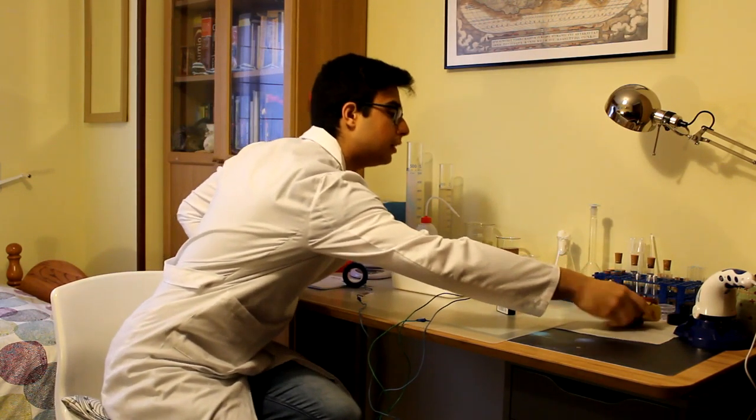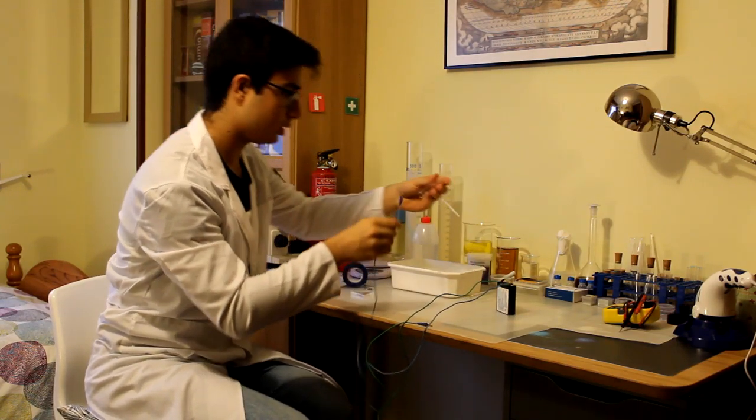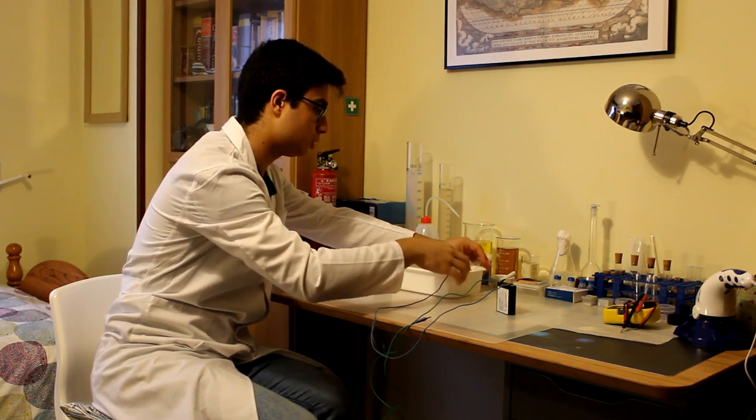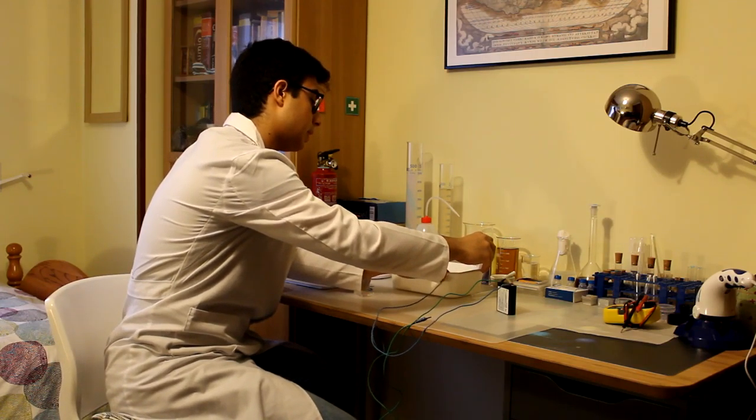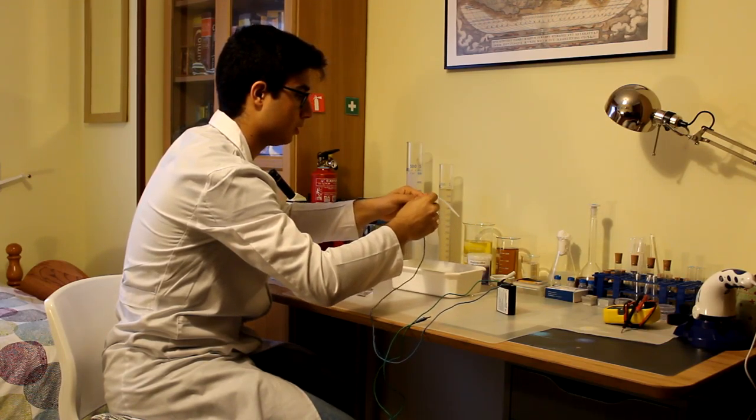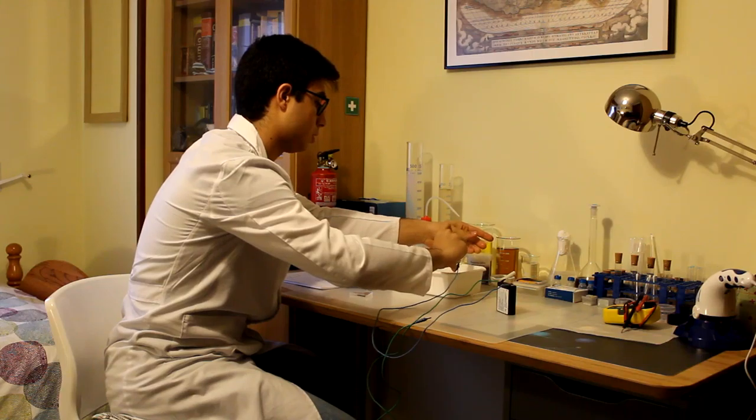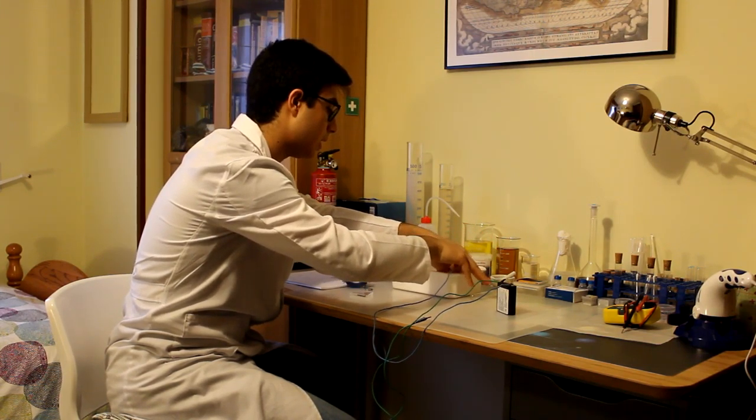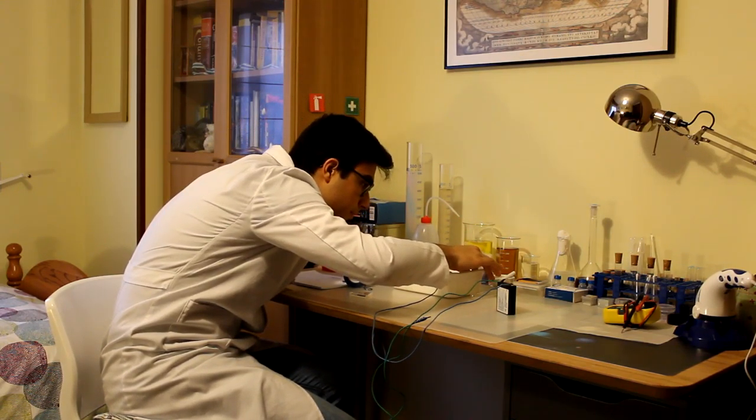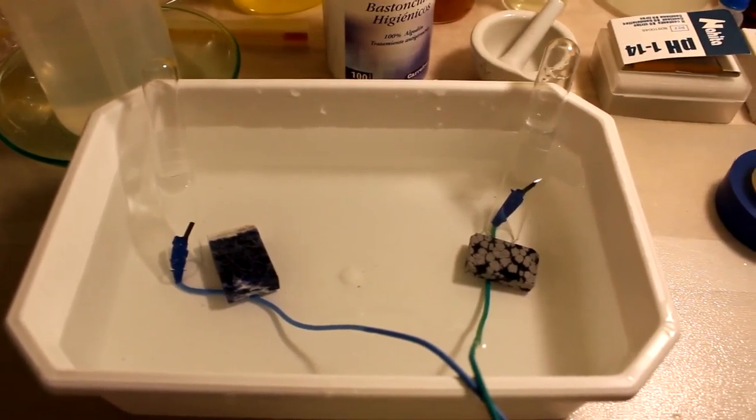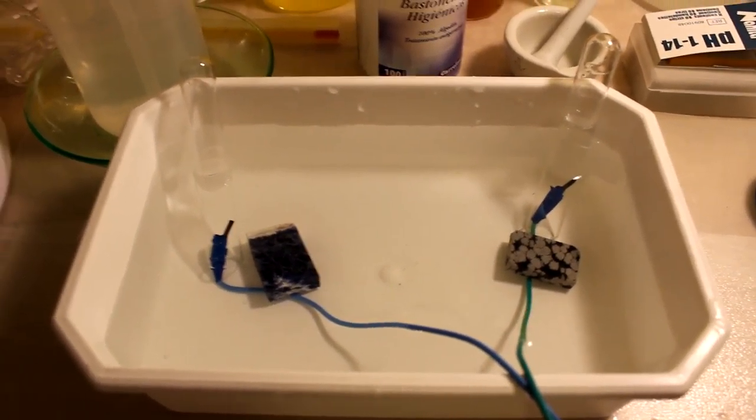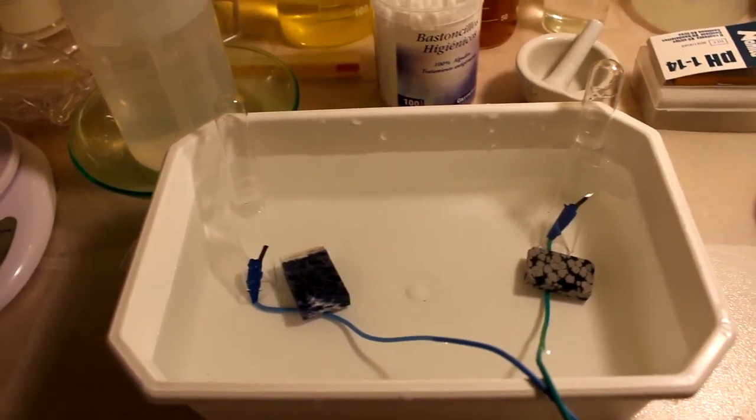Vale. Y ahora cogemos el tubo de ensayo y lo colocamos en la cubeta de tal manera que el grafito esté completamente sumergido. Ya lo he terminado. Lo que he hecho ha sido ponerle un poco de peso a los cables para que se estén bien sujetos y no se muevan. Y ahora voy a explicar lo que va a pasar de aquí a unos minutos.